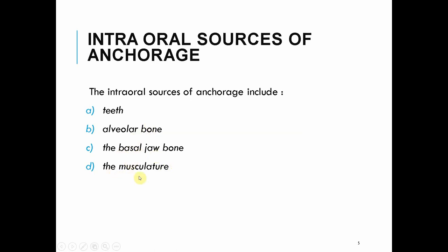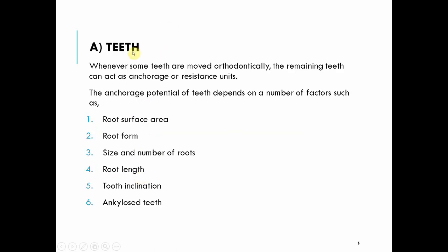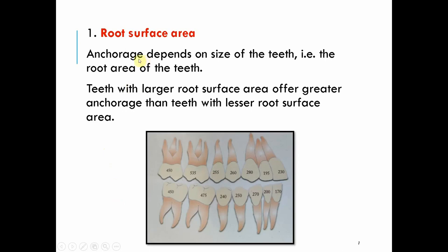Whenever some teeth are moved orthodontically, the remaining teeth can act as anchorage or resistance units. The anchorage potential of teeth depends on factors such as root surface area, root form, size and number of roots, root length, tooth inclination, and ankylosed teeth. The more the root surface area, the better will be the anchorage. Anterior single-rooted teeth have lesser root surface area.